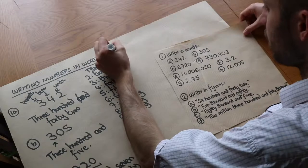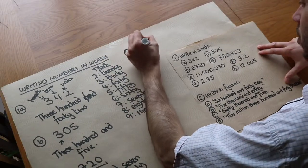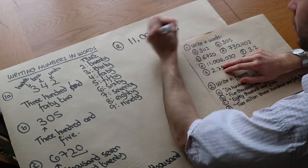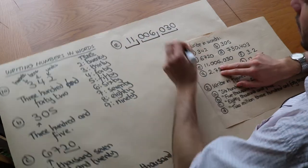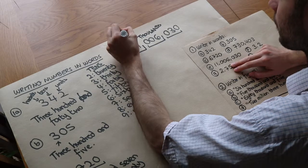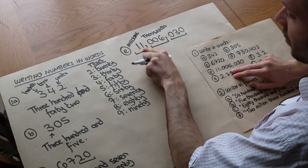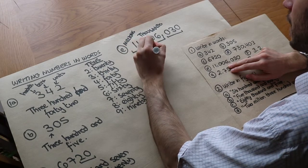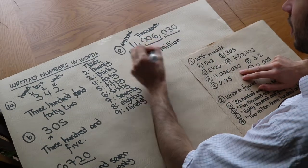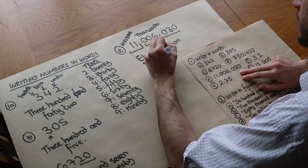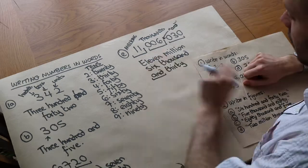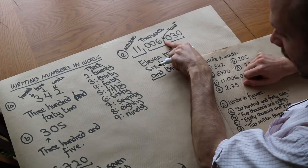We can use a similar principle for this next large number: one one comma zero zero six comma zero three zero. We divide it into blocks of three from the right. The rightmost block is thirty. The middle block is six, which is the thousands block, so six thousand. The leftmost block is eleven, which is the millions block, so eleven million. The full number is eleven million six thousand and thirty.